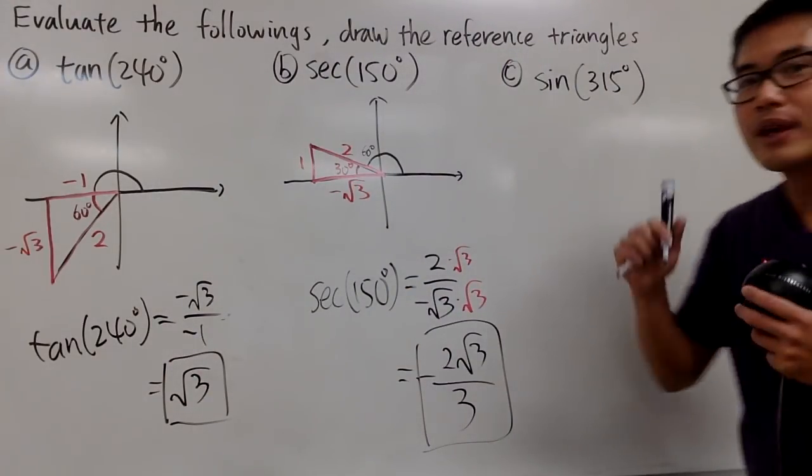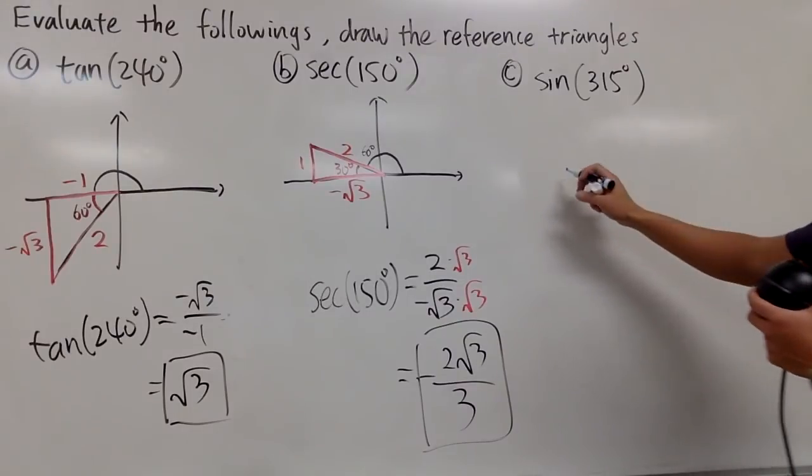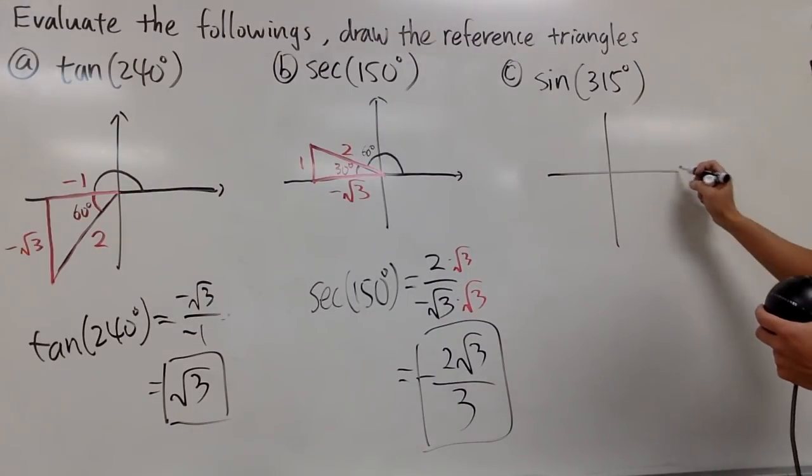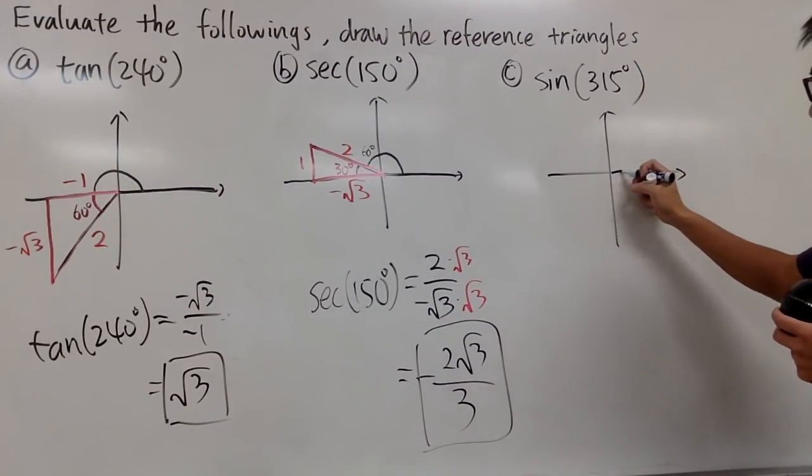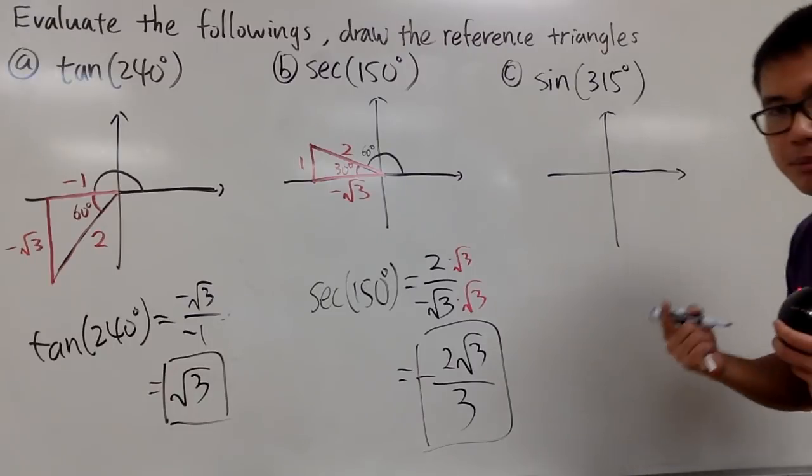Last one. Sine of 315 degrees. So without further ado, you know the deal. Draw the picture, starting from the positive x-axis, and just keep track when you rotate.